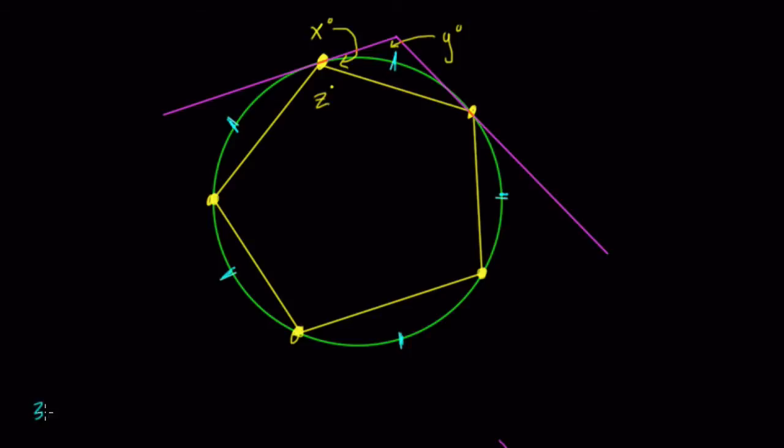First, we have a circle, 360 degrees. To find the length of each arc, we divide by five. That's 72 degrees. So this arc is 72 degrees.